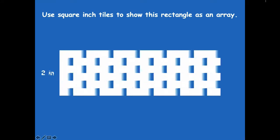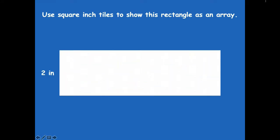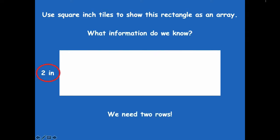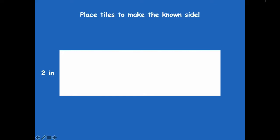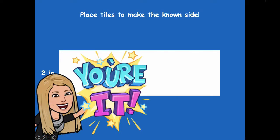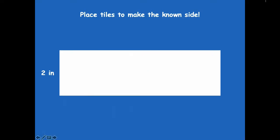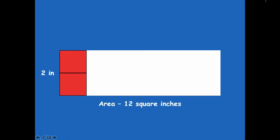We're going to use square inch tiles to show this rectangle as an array. We know that one side is two inches, so we need two rows because that's two inches, and each square tile is one inch. Go ahead and pause the video — I want you to place two tiles to represent your side of two inches.